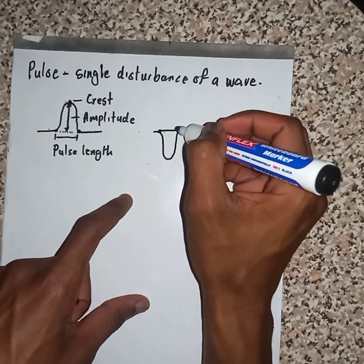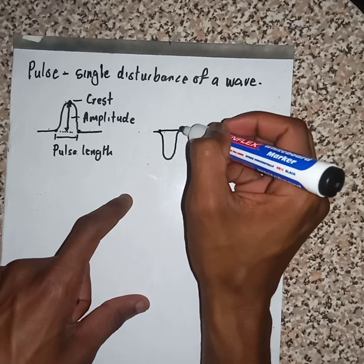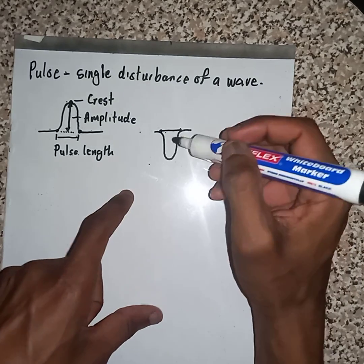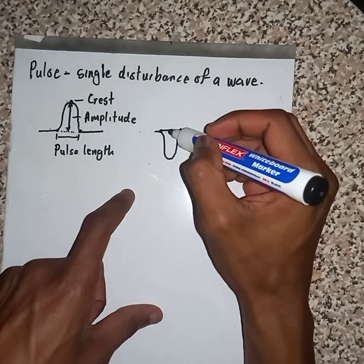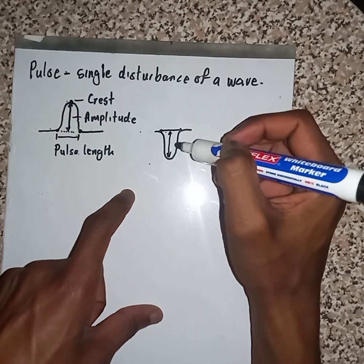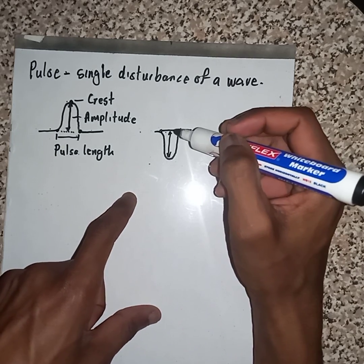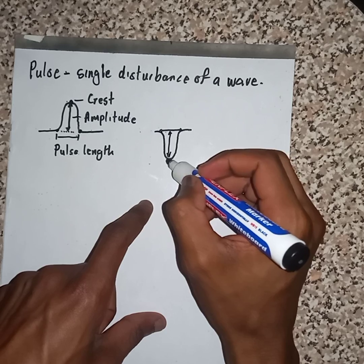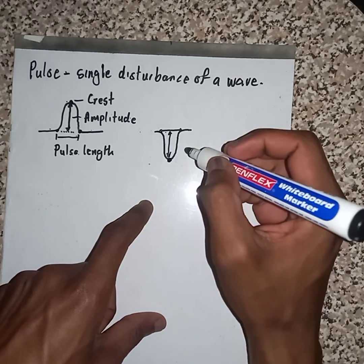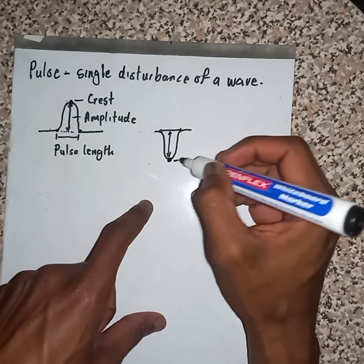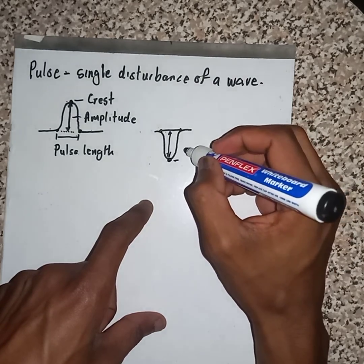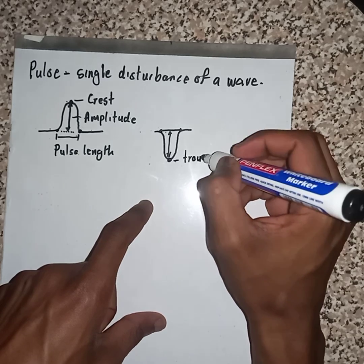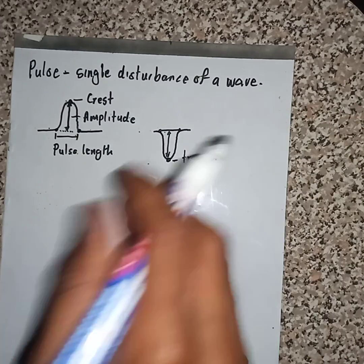The same applies if we had a diagram like this. This distance will be the pulse length, and this displacement will be the amplitude. For this one we have a minimum point — we call it a trough.